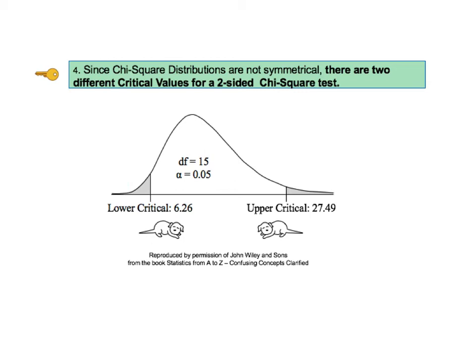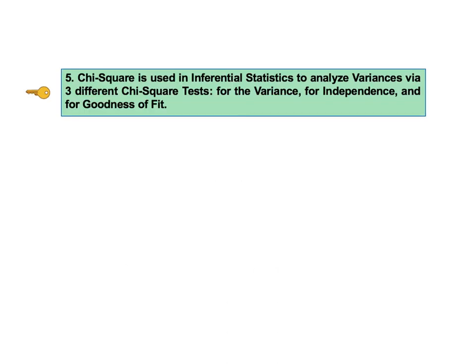If you're a little confused about the concepts of one-sided and two-sided tests, these concepts are explained in my video on the alternative hypothesis. There is also a video on critical value. Key to understanding number 5 tells us that chi-square is used in inferential statistics to analyze variances via three different chi-square tests: the chi-square test for the variance, the chi-square test for independence, and the chi-square test for goodness of fit. In this video we'll take a brief look at each of these, but they can be somewhat confusing to understand. In the book there are individual articles on each of these three tests, and individual videos are planned.